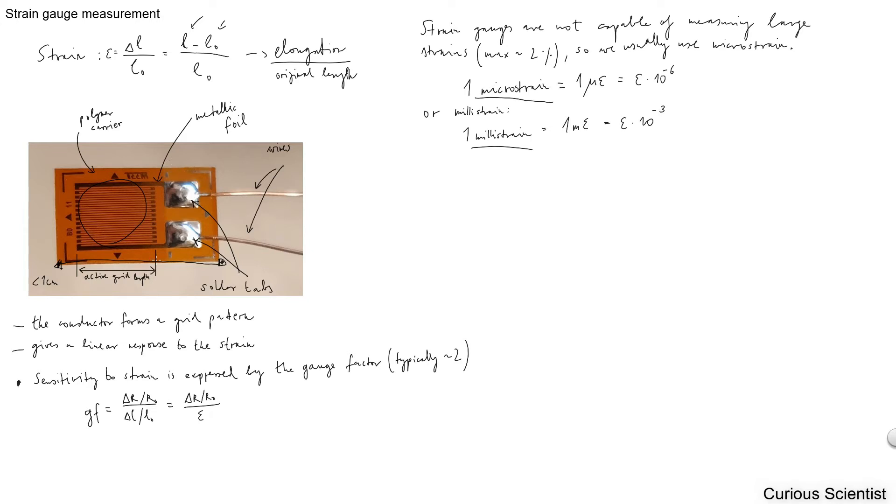On top of this polymer foil we have this metallic foil, very thin wires, and then we have these two copper wires which go to the circuit. Within this two percent we get a linear response, which is very good because it's easy to measure.